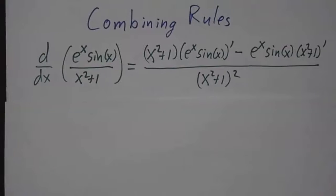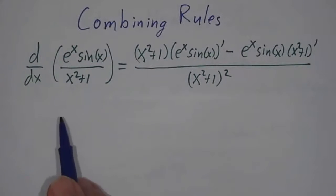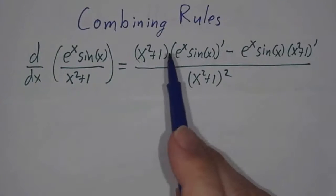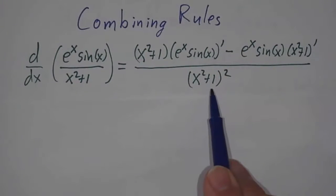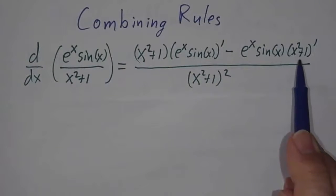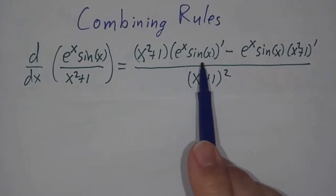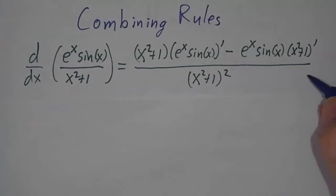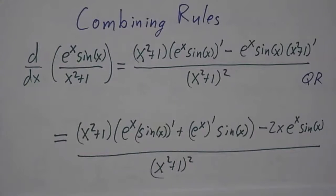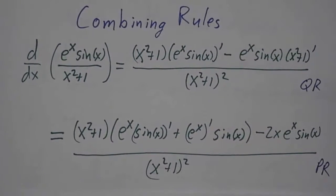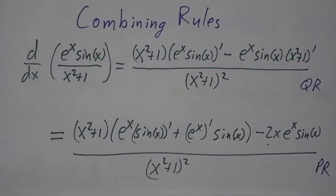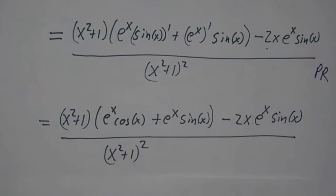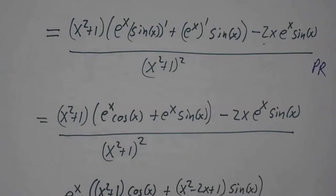You're not limited to just using one rule for each kind of problem. If you want to figure out the derivative of e to the x times sine x, over x squared plus 1, you can and should use the quotient rule. So it's the denominator times the derivative of the numerator, minus the numerator times the derivative of the denominator, divided by the denominator squared. The derivative of x squared plus 1 is easy — that's 2x. But what's the derivative of e to the x sine x? We've got the product rule for that. So we use the quotient rule at this step, and then at the next step we use the product rule to say that the derivative of e to the x sine x is e to the x times the derivative of sine, plus the derivative of e to the x times sine, and the derivative of x squared plus 1 is 2x.